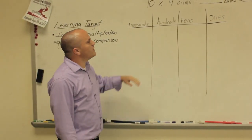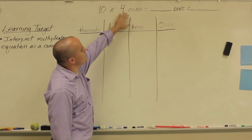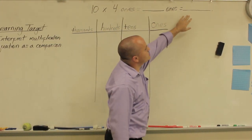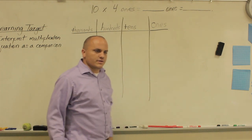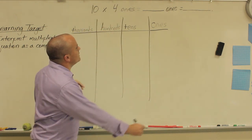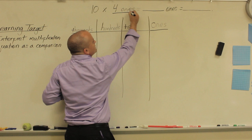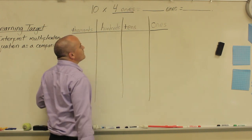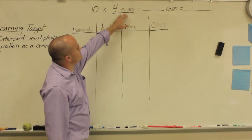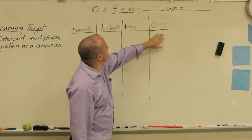The first problem on the homework is ten times four ones equals blank ones equals blank. So the first thing we're going to do is look at ten times four ones. Just as Mr. Holmes showed you, we have four ones that we're going to underline. That represents the unit that we're going to look at — we have our ones unit.